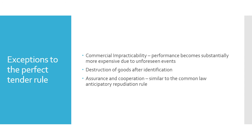Assurance and cooperation is similar to anticipatory repudiation. When the seller has some doubt — from external factors or communication from the buyer — that the buyer may not be able to pay for the goods, the seller can request assurances that the buyer is in fact solvent and able to pay, or request cooperation, which may mean modification of payment terms. For example, if I know you've filed for bankruptcy, I may only do business on a cash basis; if our contract had credit terms, I may need your cooperation in modifying that term.